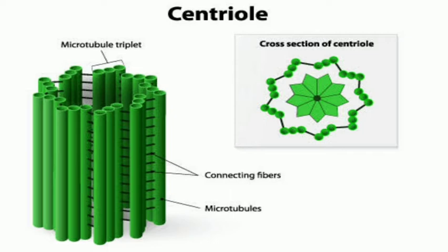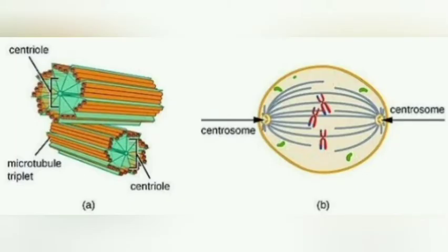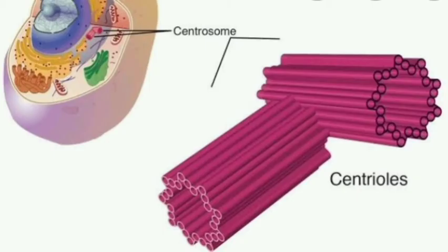Centrioles hollow cylindrical organelles ہوتے ہیں جو کہ animal cells میں، microorganisms کے cells میں اور lower plants کے cells میں پائے جاتے ہیں۔ Higher plants کے cells میں centrioles موجود نہیں ہوتے۔ Centrioles 27 microtubules پر مشتمل ہوتے ہیں جو کہ 9 triplets کی شکل میں پائے جاتے ہیں۔ Animals کے cells میں دو دو centrioles موجود ہوتے ہیں جو ایک دوسرے سے right angle پر پائے جاتے ہیں اور ان کو collectively centrosome کا نام دیا جاتا ہے اور یہ nucleus کی exterior کی سائیڈ پر پائے جاتے ہیں۔